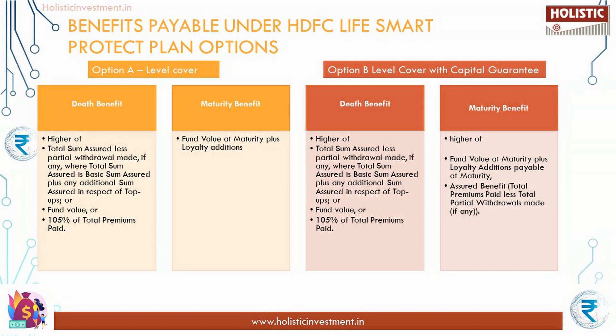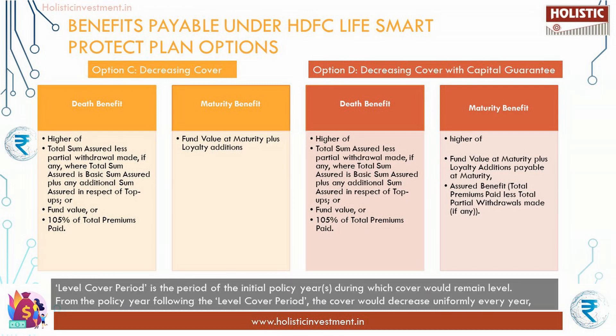Option B - Level Cover with Capital Guarantee: the death benefit is similar to Option A. The maturity benefit differs — it is the higher of fund value at maturity plus loyalty additions, or the assured benefit which is total premiums paid less total partial withdrawals made. For Options C and D (decreasing cover), we need to understand the terms 'level cover period' and 'decreasing cover'. Otherwise, Option C is similar to Option A and Option D is similar to Option B in terms of maturity and death benefit.